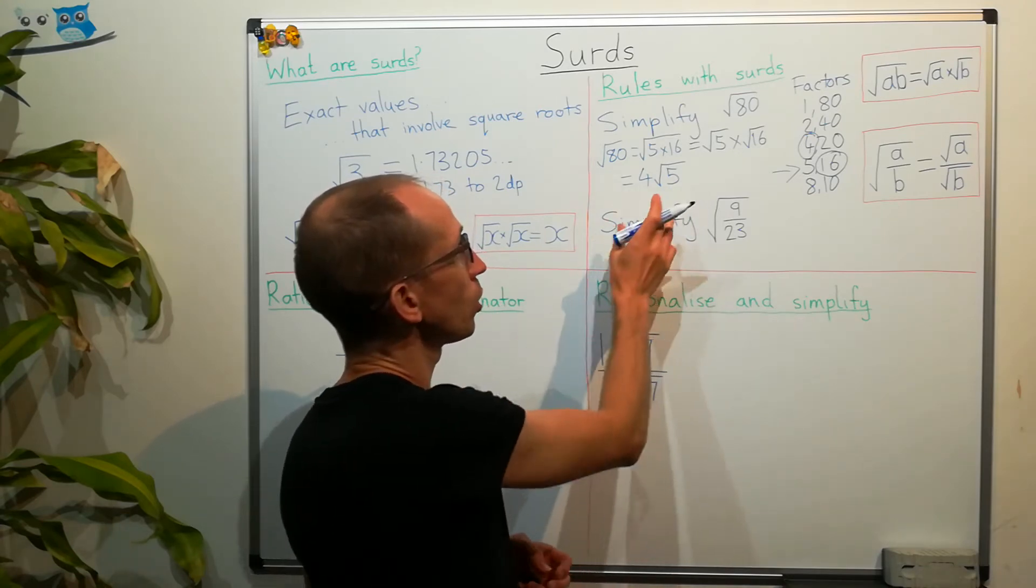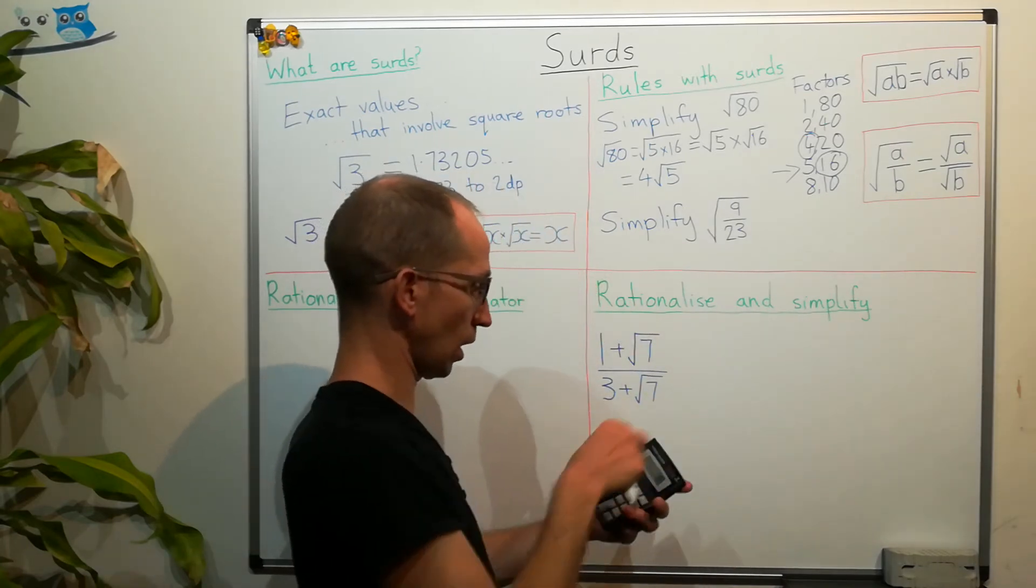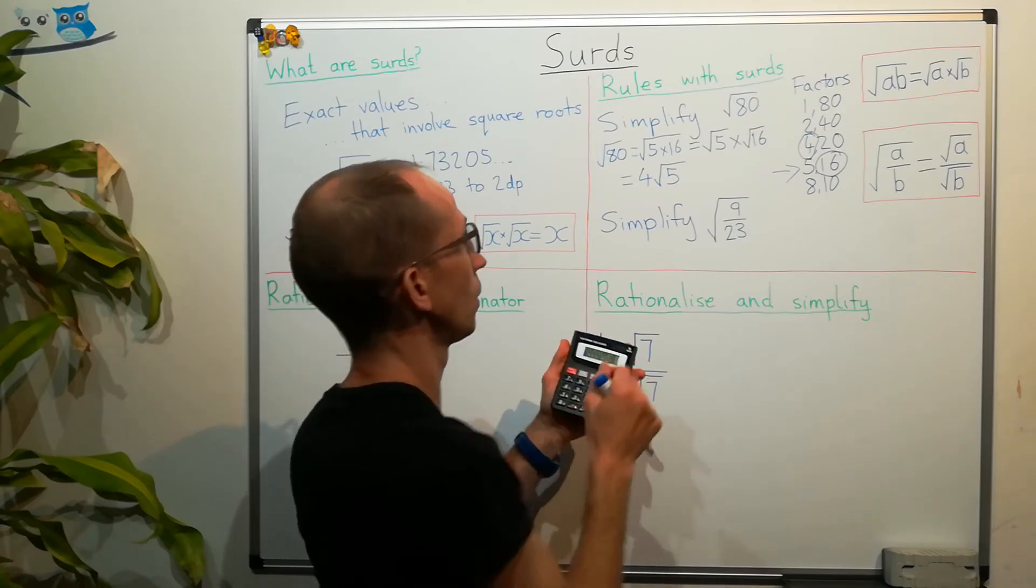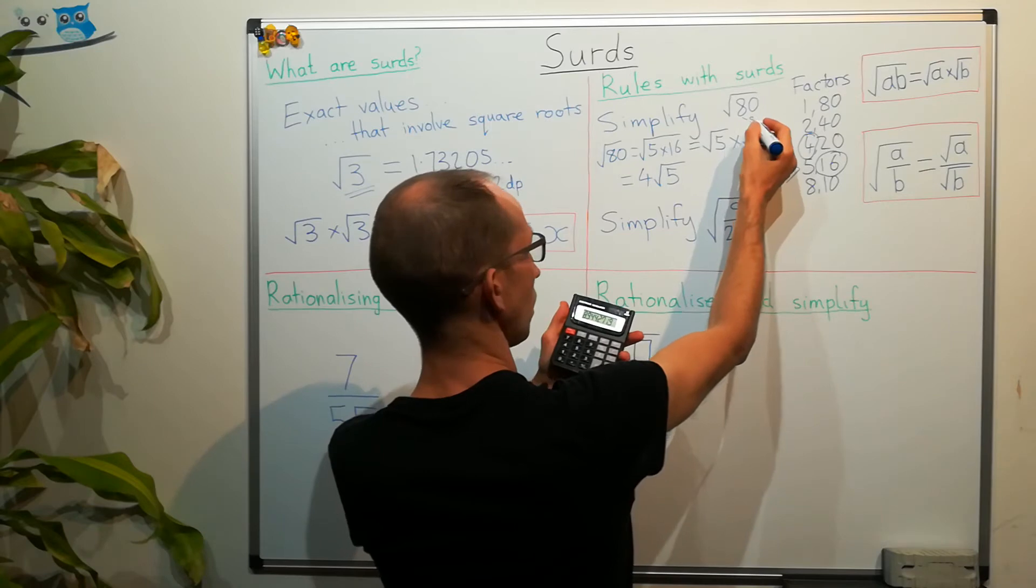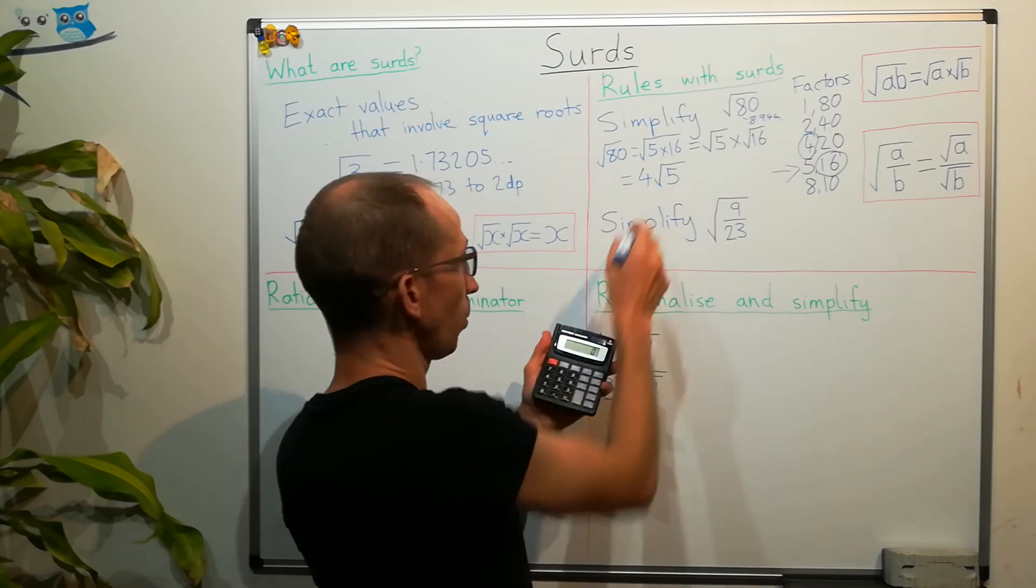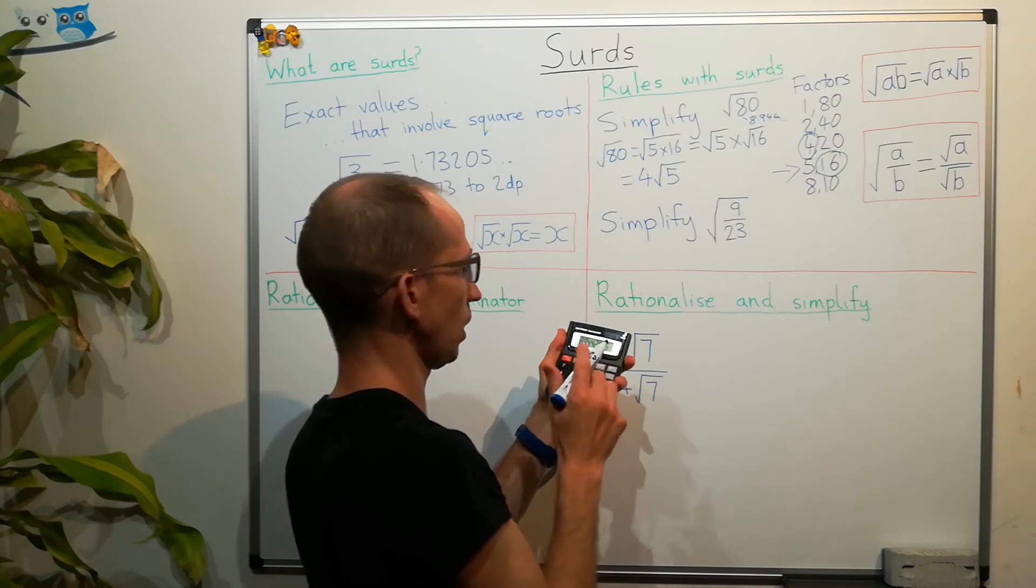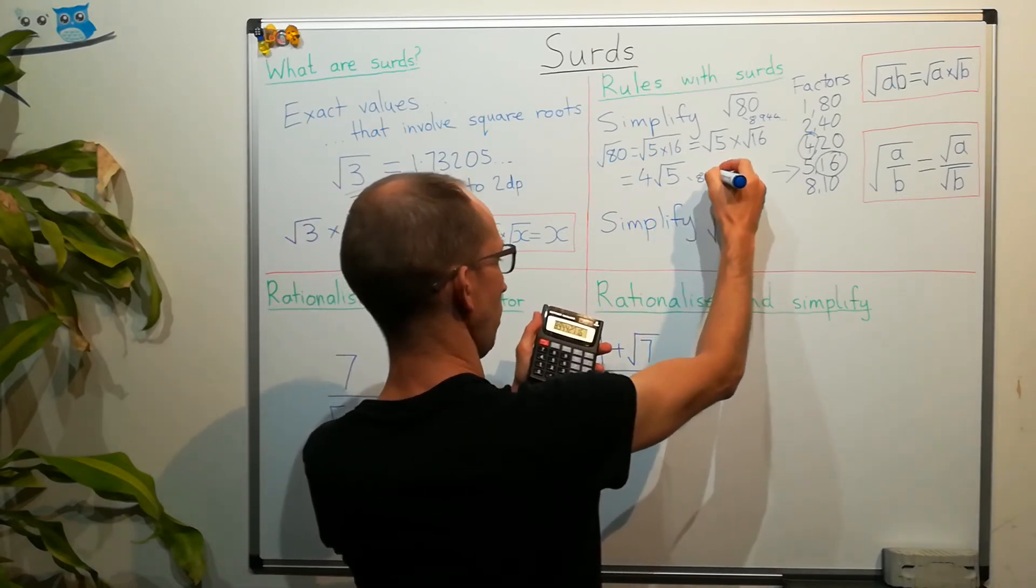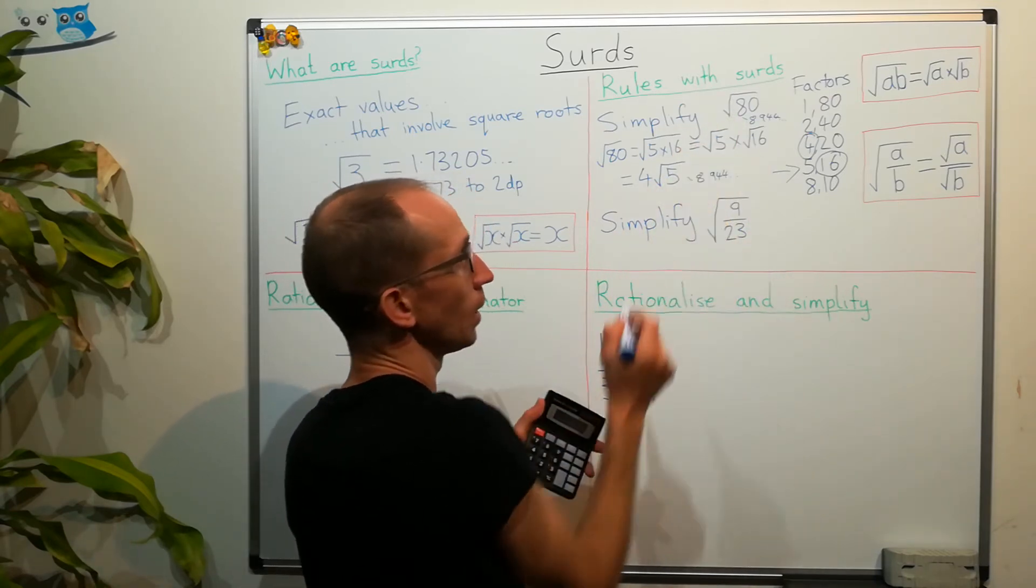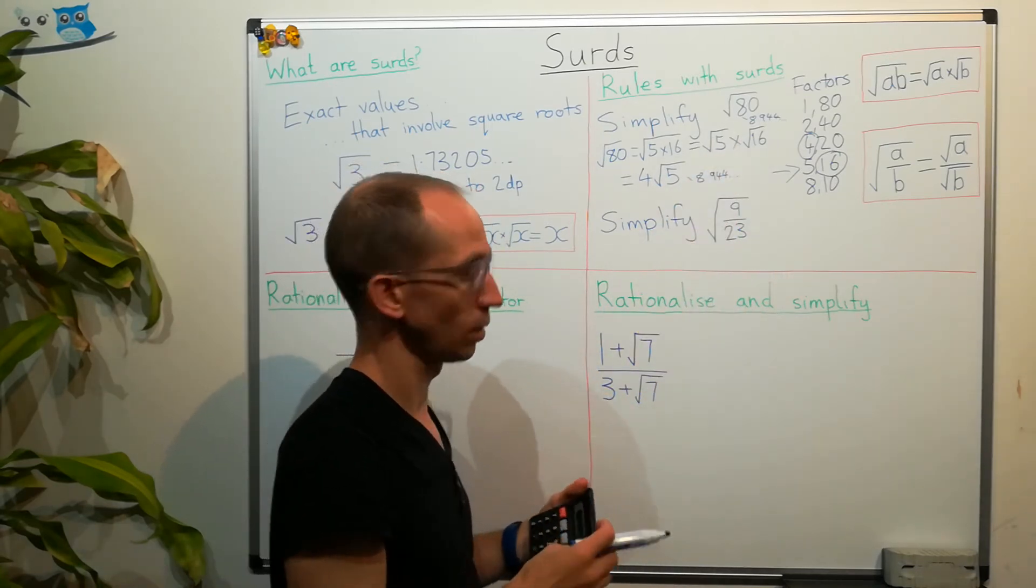Now, what's always good when you're doing these simplifications is to check. So, I've done my calculator again. If we start off with the square root of 80, we get that as 8.944. Now, if we do the same with 4 times root 5, we should get the same answer. Yes. 8.944. So, always check that when you've done any sort of simplifying of this nature. Check that you get the same answers when you put them in your calculator.